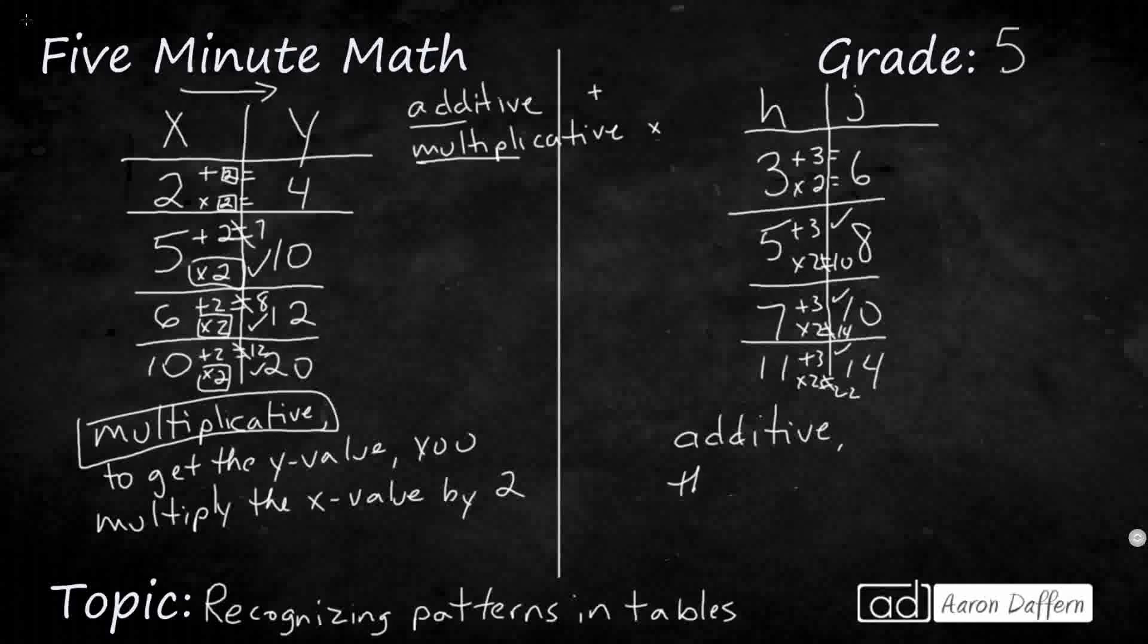Or I can say the J value, there's different ways that we can represent this relationship with words. Is always, and then what I'll do is I'll say 3 more. So I'm going to describe this relationship, this additive relationship, without even using the word additive or addition or anything like that, because sometimes you might not see that in the answer. Is always 3 more than the H value. So that's how we can try to find additive and multiplicative relationships in tables.